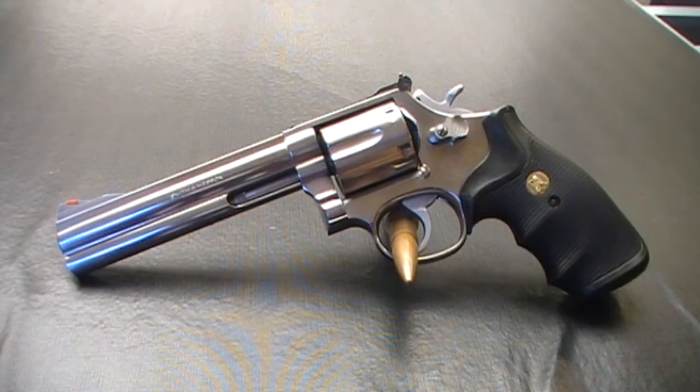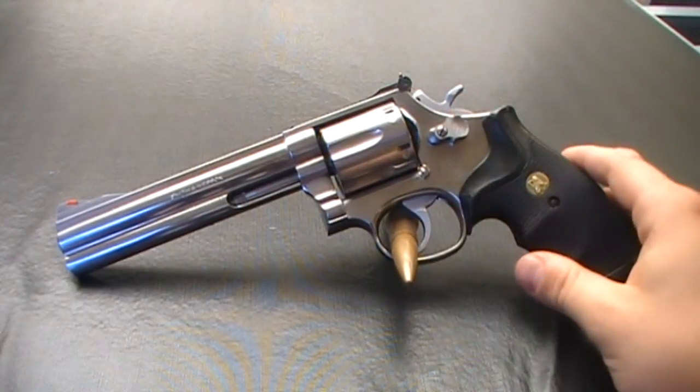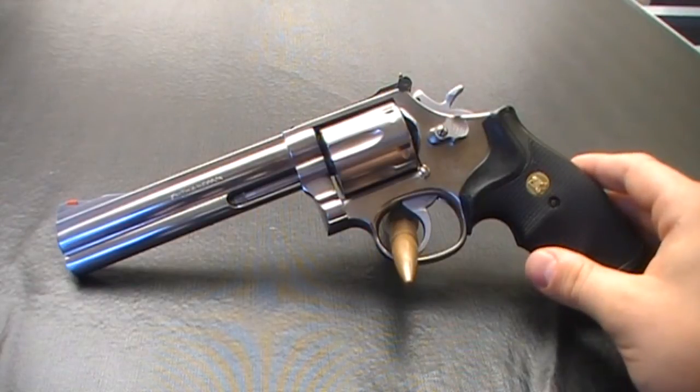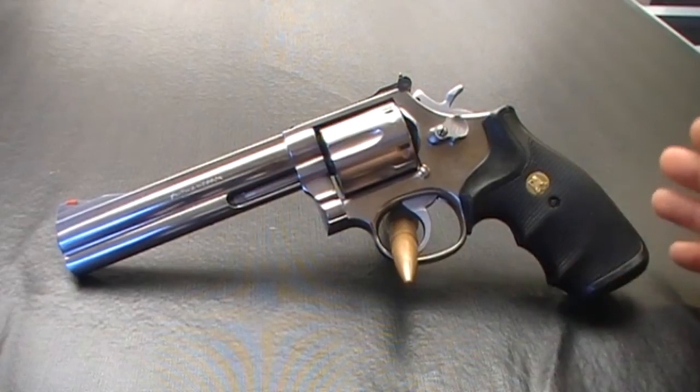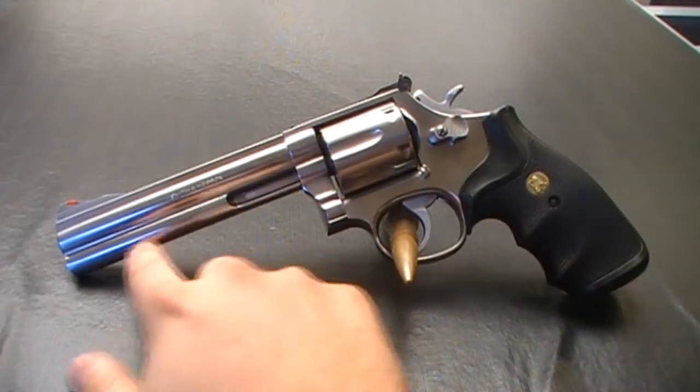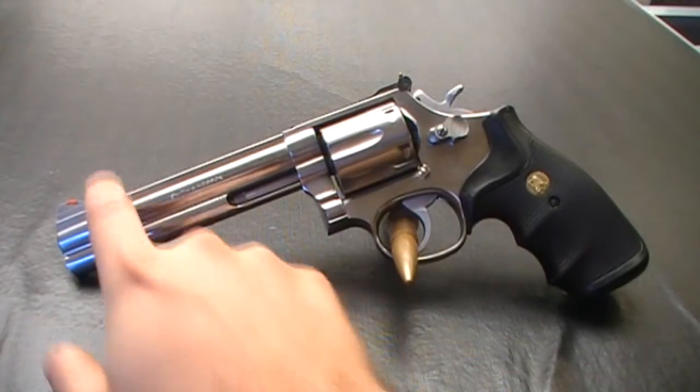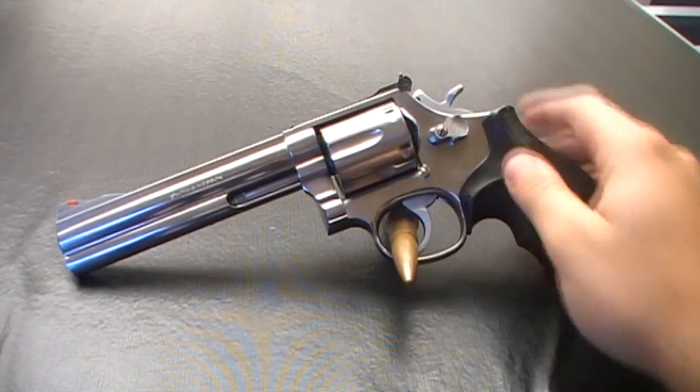It's standard from the factory but this one has a trigger job on it to lighten up the trigger and spring so it would have a spring kit in it. This is the full length shroud with the normal front sight. It has the adjustable sights.